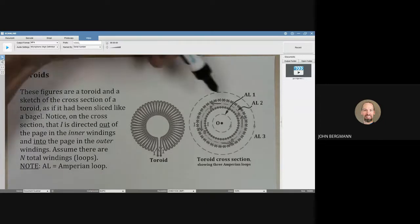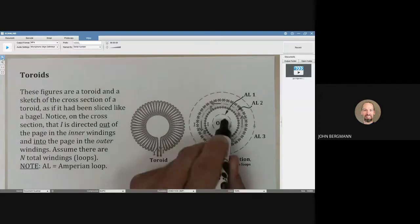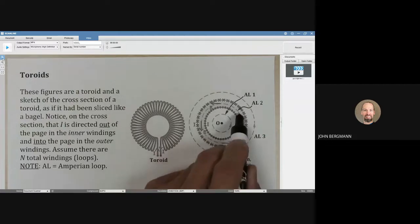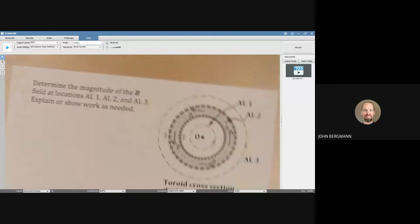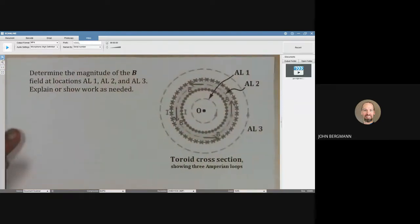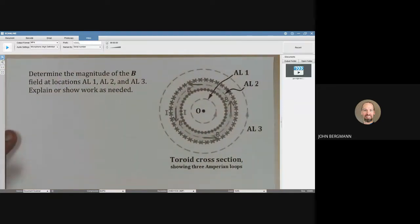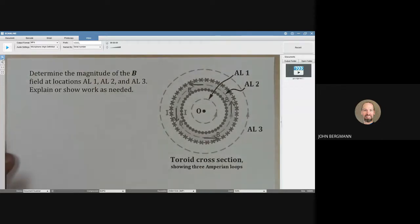So what we're showing here is we're showing three Amperian loops. One inside the toroid, one within the enclosed current area of the toroid and then one on the outside and what we want to do is we want to determine the magnitude of the magnetic field at those locations of Amperian loops one two and three, explain or show work as needed.